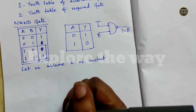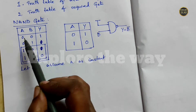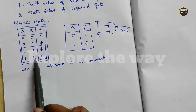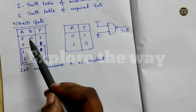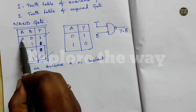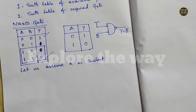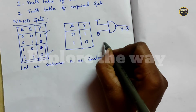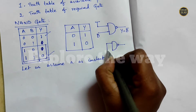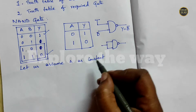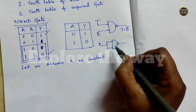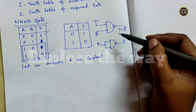We can get inverter functionality from one more combination. If both inputs are 0, output is 1; if both inputs are 1, output is 0. From these two cases we can observe that if you combine both inputs you get inverter functionality. So we can draw it like this — if you join both the inputs and give some name B, then output Y equals B-bar. In these two ways we can make a NAND gate act as an inverter.